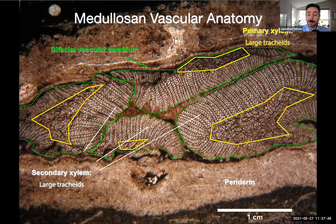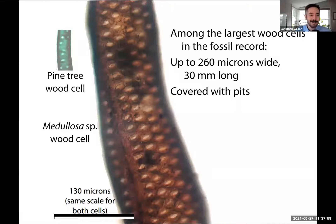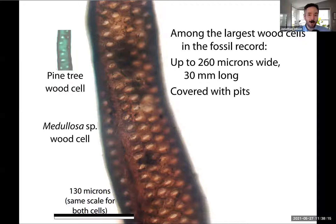These plants are also interesting on a cellular level. Medullosins have xylem cells that are among the largest in the fossil record. Here's a light micrograph of a medullosin tracheid with a pine tracheid at the same scale. With medullosins, their large leaf area and large xylem cells are features we associate today with plants that have high water demand and that can supply high water demand.